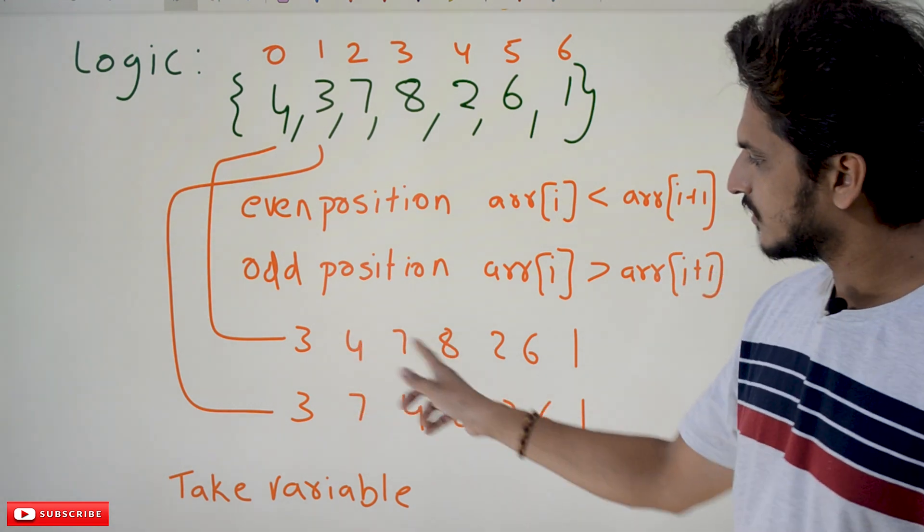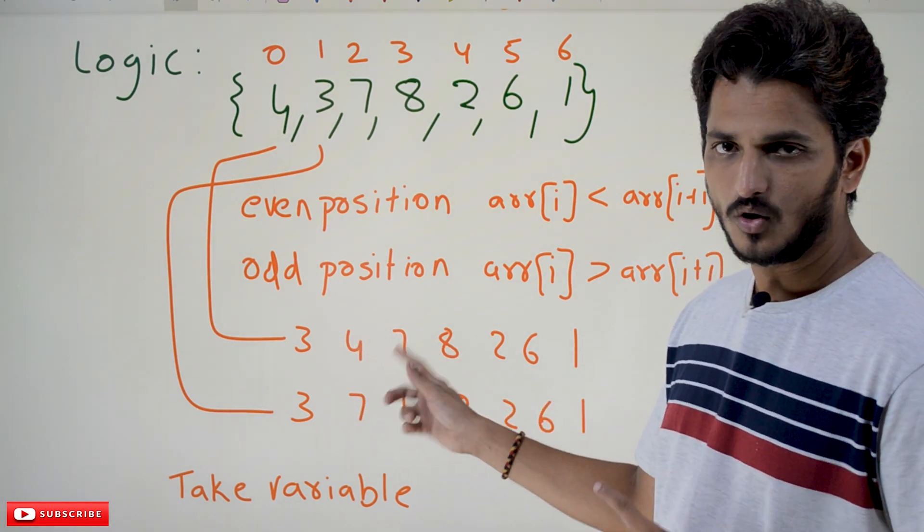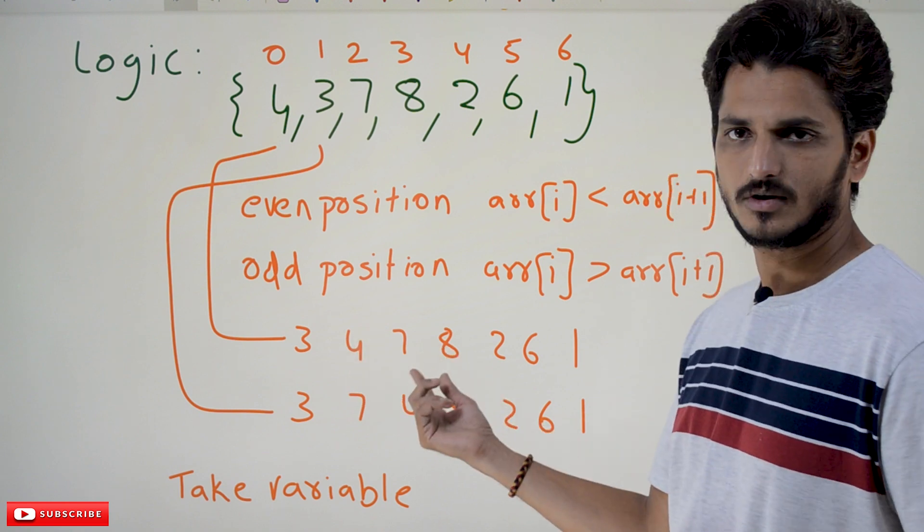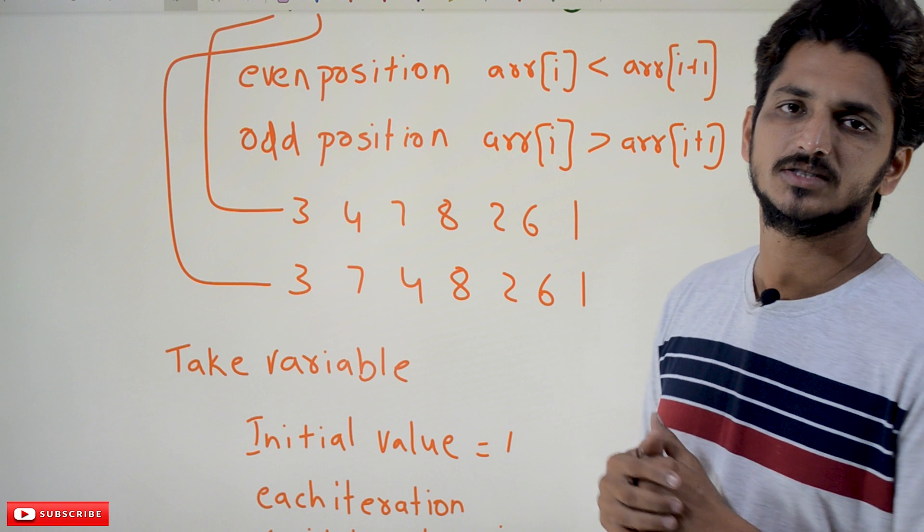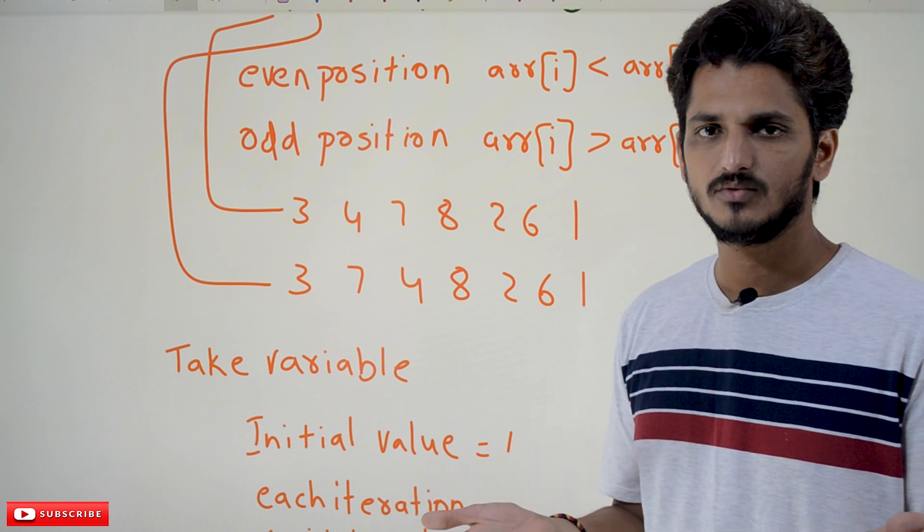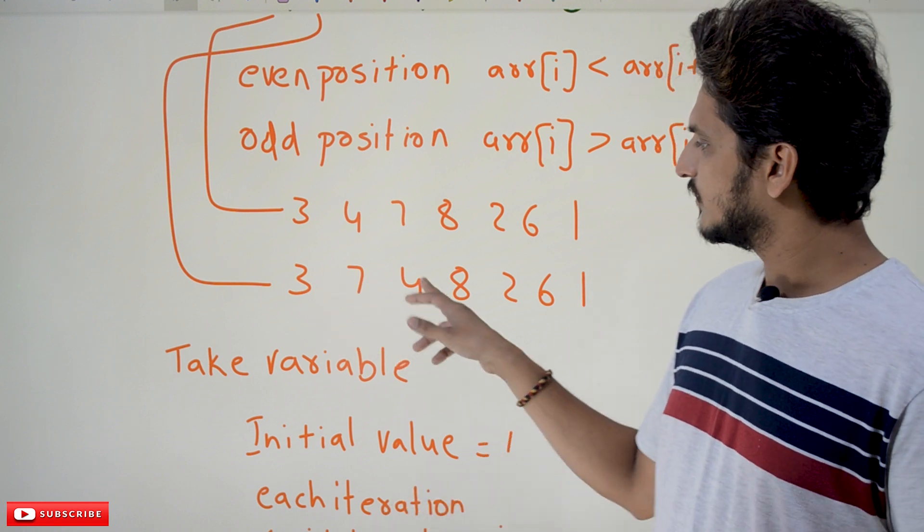4, 7. Is it greater than? No. So swap: 7, 4. So apply these two conditions for all the elements present in the array. That's it, that logic is very simple.